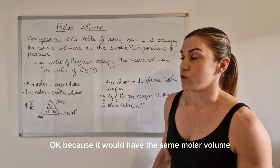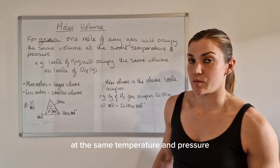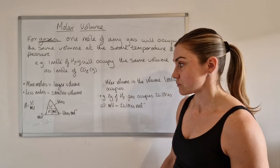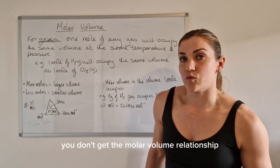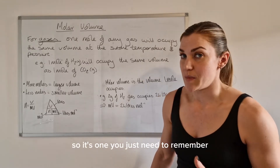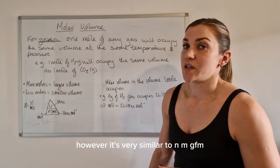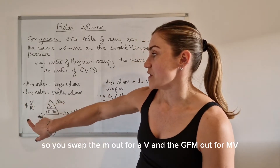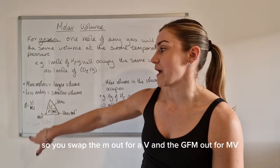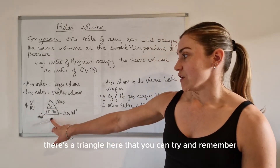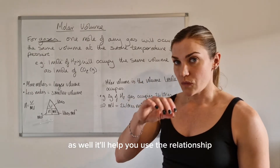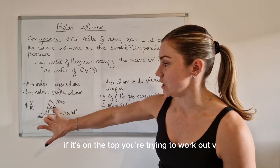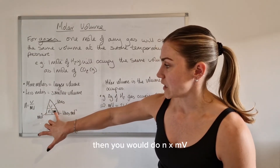It doesn't matter what the gas is — at the same temperature and pressure they will occupy the same space if it's the same number of moles. The molar volume relationship isn't in the data booklet so it's one you need to remember. It's very similar to N = M/GFM — you swap M out for V and GFM out for MV. There's a triangle you can use to remember the relationship: if you're trying to work out V, the volume, you do N times MV.